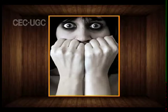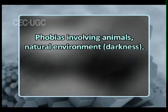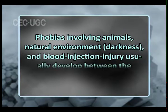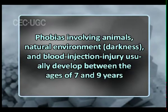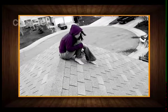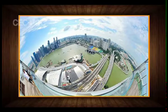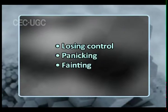In children, phobias involving animals, natural environment such as darkness, and blood-injection-injury usually develop between the ages of 7 and 9 years, and these are reflections of normal development. Some specific phobias include acrophobia (fear of heights), aerophobia (fear of drafts, air swallowing, or airborne noxious substances), and aeroacrophobia (fear of open high places). Specific phobias may also involve concerns with losing control, panicking, and fainting as a direct result of an encounter with the phobia.